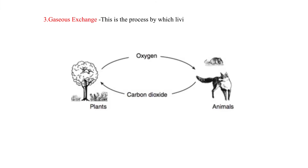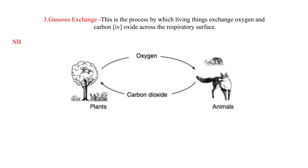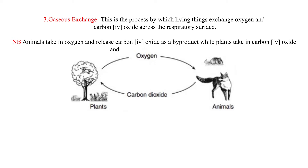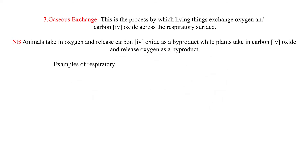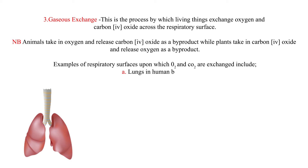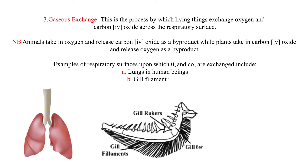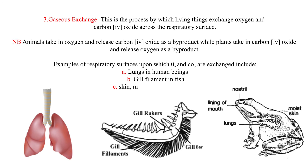Three: gaseous exchange. This is the process by which living things exchange oxygen and carbon dioxide across the respiratory surface. Animals take in oxygen and release carbon dioxide as a byproduct, while plants take in carbon dioxide and release oxygen as a byproduct. Examples of respiratory surfaces include lungs in human beings, gill filaments in fish, and skin, mouth, and lungs in frogs.